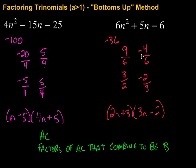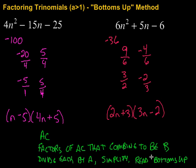Then we look for factors of that AC that combine to be B. So we look for factors of AC that combine to be B, that middle term. Then we divide each by A. Then simplify. And finally, read bottoms up.